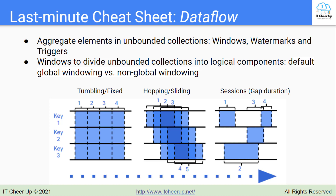Hopping windows are overlapping sliding time windows where each window might capture, for example, 60 seconds worth of data, but a new window starts every 30 seconds. The frequency with which sliding windows begin is called the period.